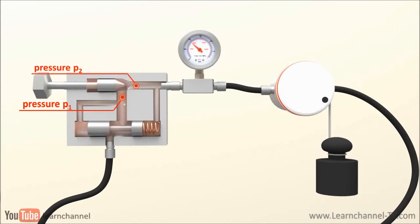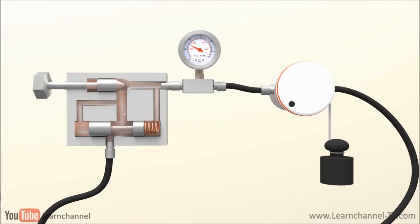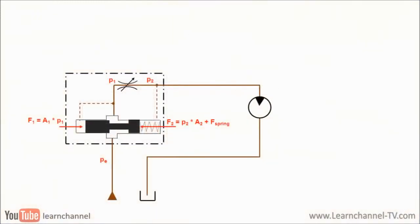Second case, the load becomes smaller so pressure P2 decreases. Now the compensator spool closes to keep the flow rate constant. For detailed information, let's switch to a schematic view.